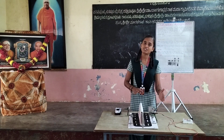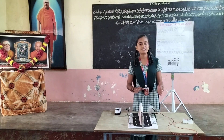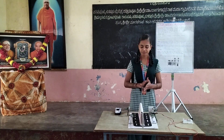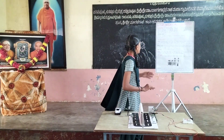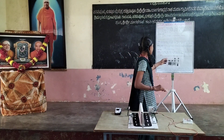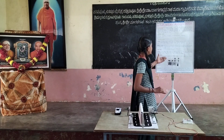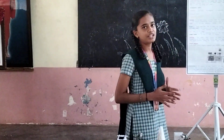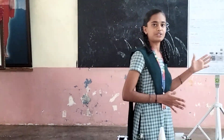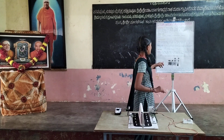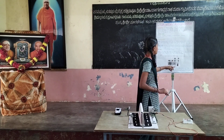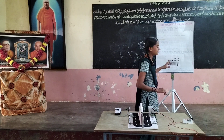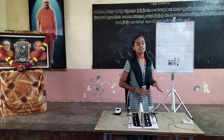Jumper wires are used to make the circuit. The circuit diagram represents the vehicle's accident prevention system at U-turns, and the components were arranged in this manner.